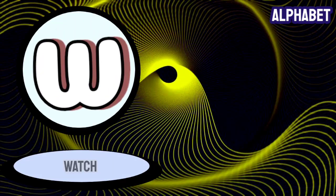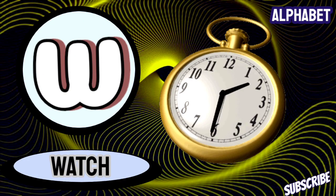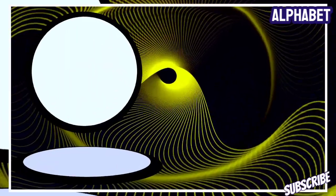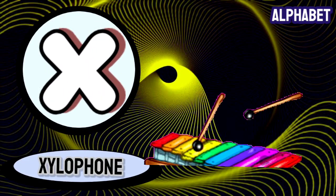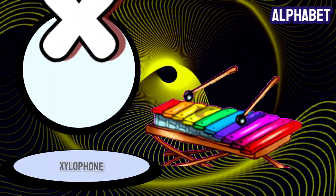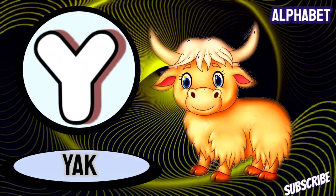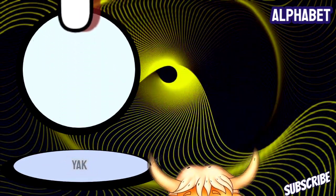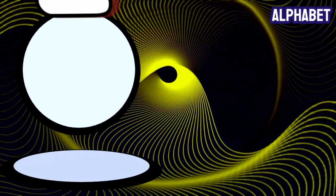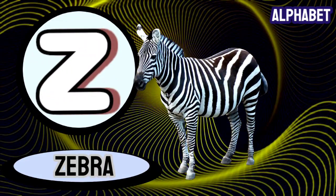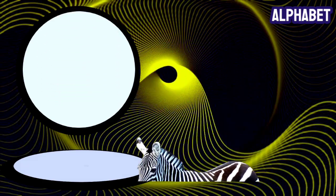W for watch, X for axolotl, Y for yard, Z for zebra.